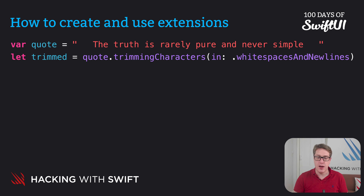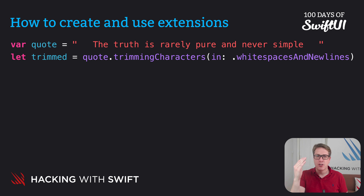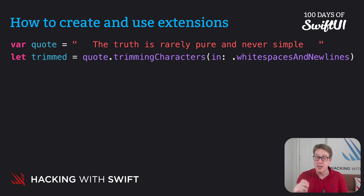Whitespaces and new lines actually come from Apple's Foundation API, which we get via Cocoa, as does trimmingCharacters(in:). Cocoa and Foundation are really helpful — keep them around. Having to call .trimmingCharacters(in: .whitespacesAndNewlines) every time we want to trim a string is a bit wordy, so we can write an extension to make it shorter.